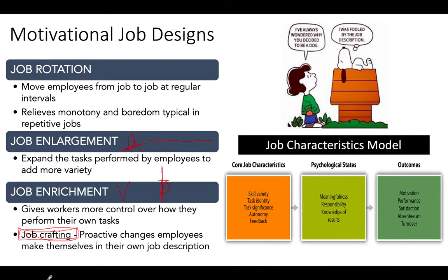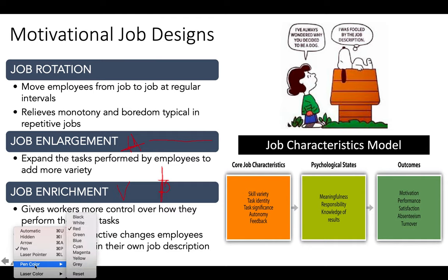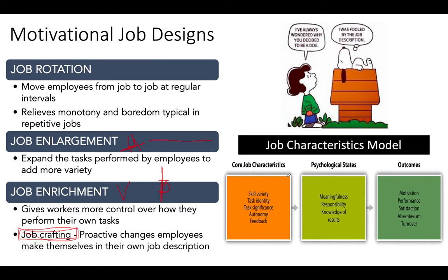Then we have the job characteristics model. This is the theory behind why job rotation, enlargement, and enrichment should work. The job characteristics model basically says we have five core job characteristics: skill variety, task identity, task significance, autonomy, and feedback.